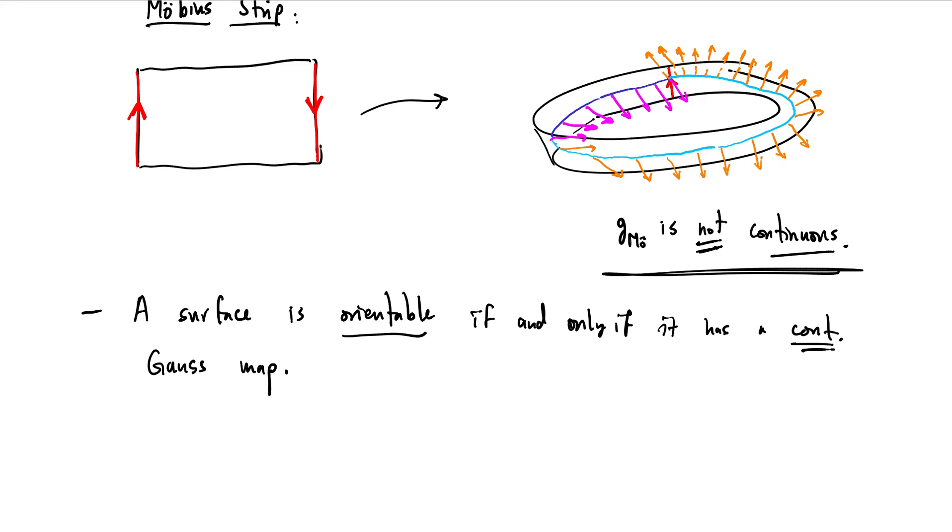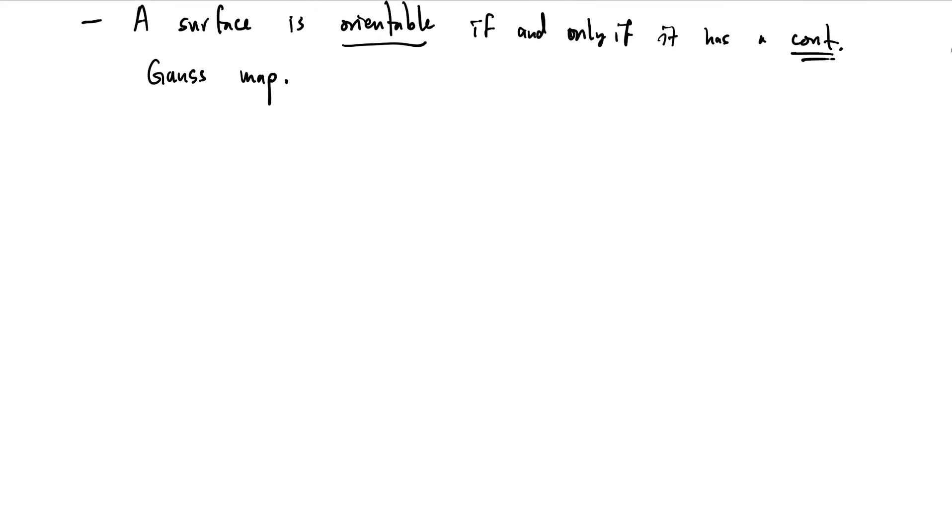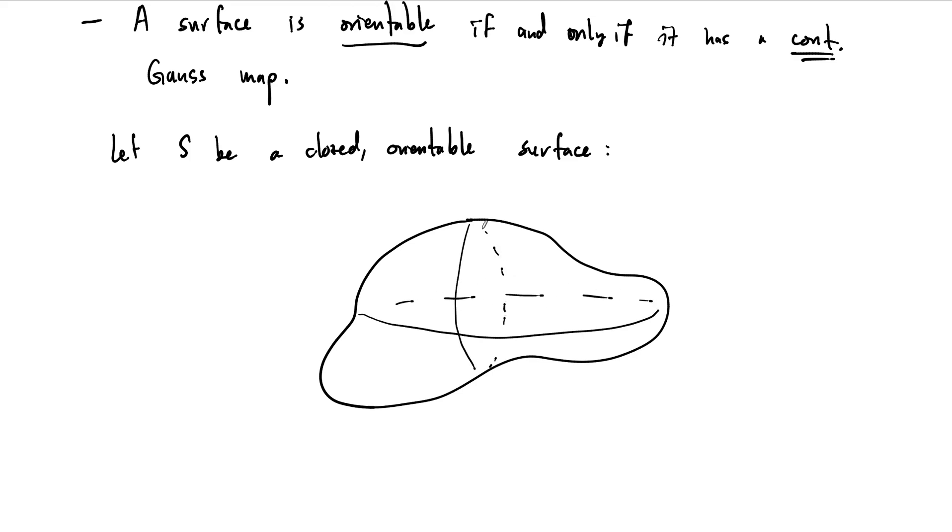Let's assume that we have a closed surface that is orientable. So let S be a closed but orientable surface, and the primary example here is like a sphere, but I'm going to draw what you might call a lumpy sphere. So there's a little bit of a lumpy sphere right there.